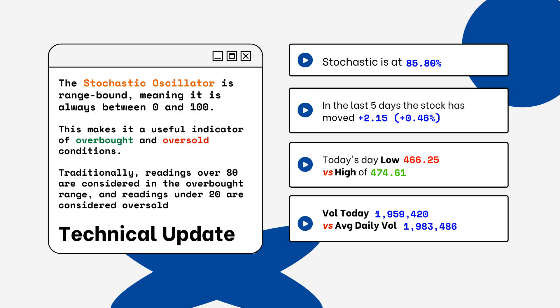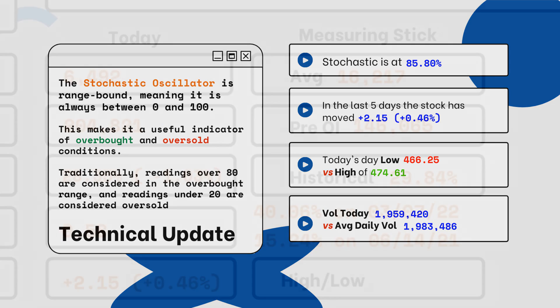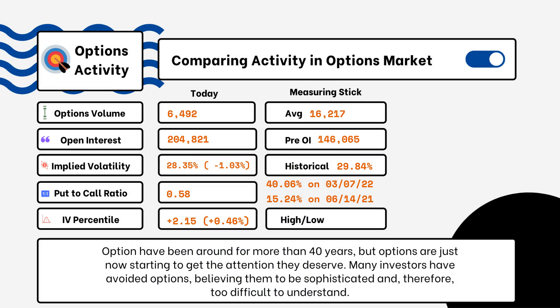We've also provided today's volume of shares traded and the average daily volume. You want to see how much volume is being traded and whether it is above or below the average daily volume level — this tells you how relevant the move is from the stock today.